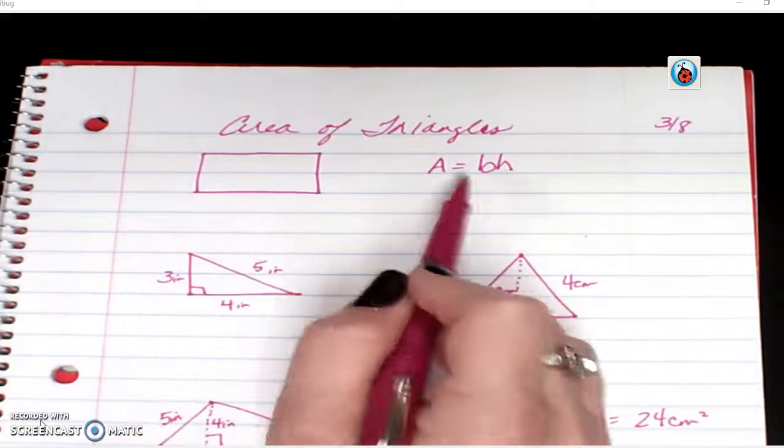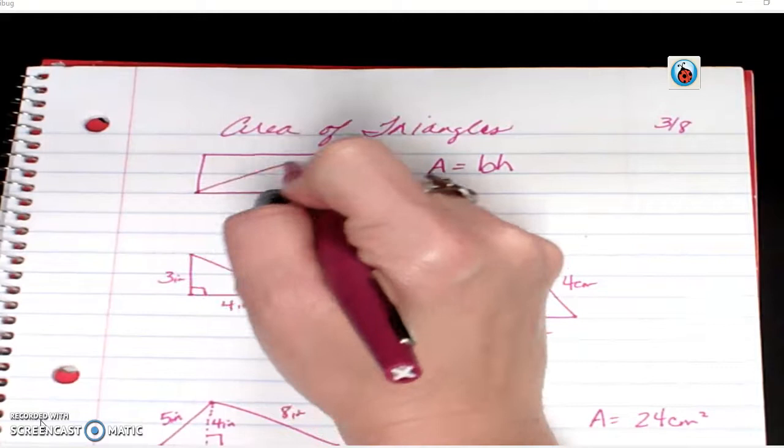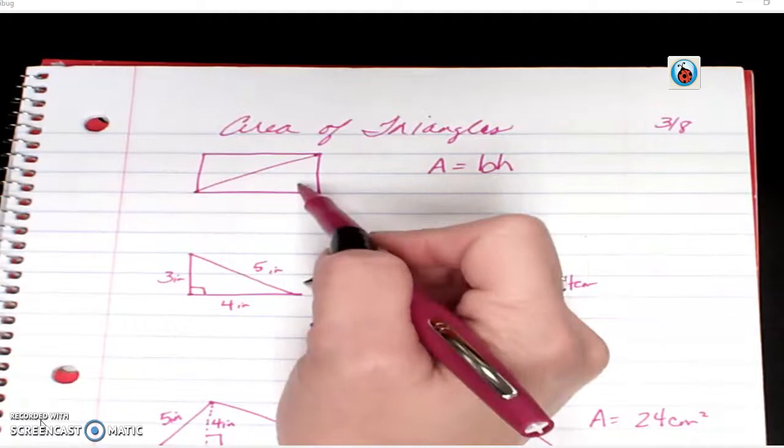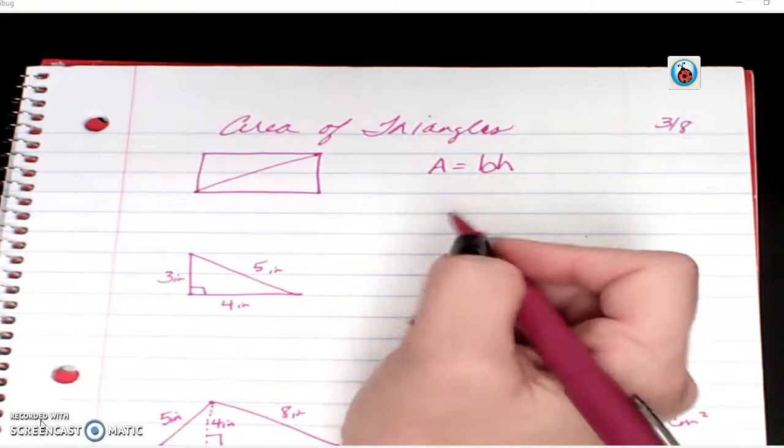If you remember, when we found the area of a rectangle, our formula was base times height. But notice, if I cut this rectangle in half diagonally, I've created two triangles.